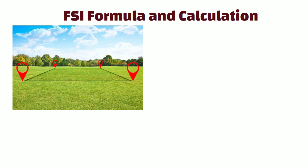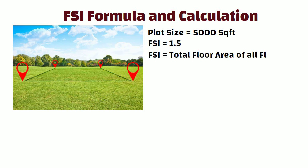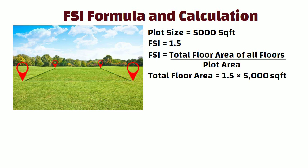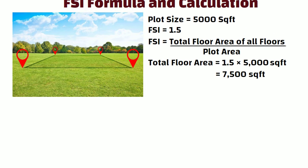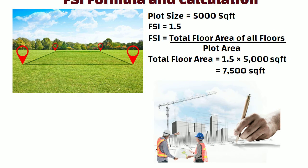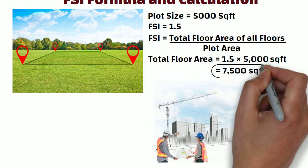Let us consider a plot of land with an area of 5000 square feet. The local zoning regulations specify an FSI of 1.5. FSI is equal to total floor area of all floors divided by plot area. Total floor area is equal to 1.5 into 5000 square feet, that is 7500 square feet. This implies that the developer can construct buildings with a total floor area of up to 7500 square feet.